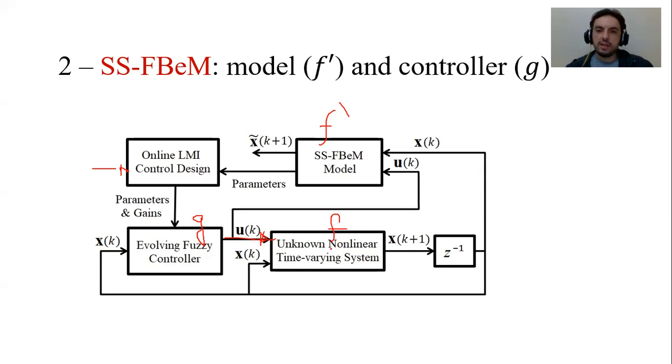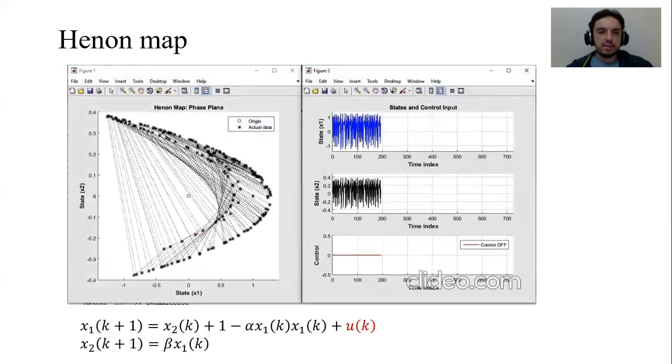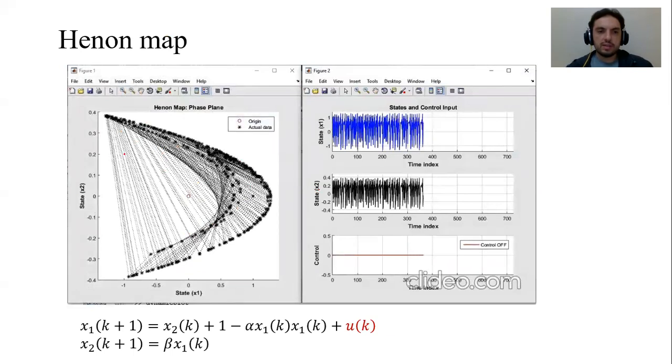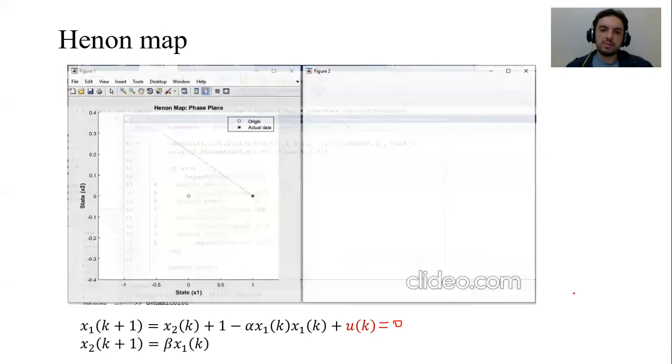F is the Henon map, which is this. It is a chaotic system. The states never repeat exactly. This is the phase plane. This is how the states evolve over time. There's no control here, so the control input in this case is zero.